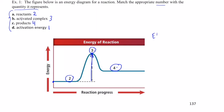Before we leave this graph — is this reaction exothermic or endothermic? If you said endothermic, you were correct. The reactants have a certain amount of energy and the products have more energy, so we had to gain energy in the reaction — this is an endothermic reaction.